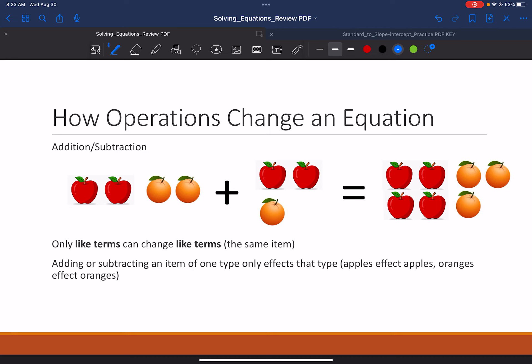So, let's start talking with addition and subtraction. Now, what we have here is we have two apples and two oranges, adding two more apples and one more orange. Obviously, that gives us four apples and three oranges. The point here is not that you need to learn how to count. The point here is that we're trying to say you can only combine like terms with like terms. We can't add apples to oranges and suddenly end up with seven apples.